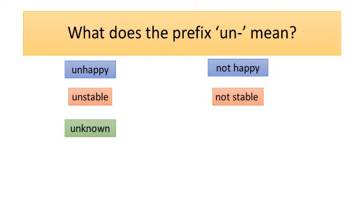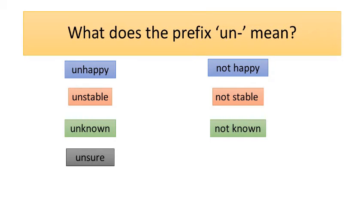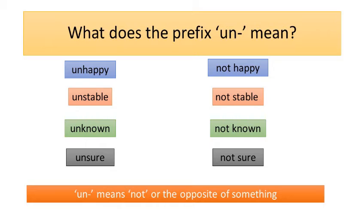Have a little think. That's right — to not know something. And the word unsure — it means not sure. So, what does the prefix un mean? Have a little think about this. That's right, it means not, or the opposite of something.